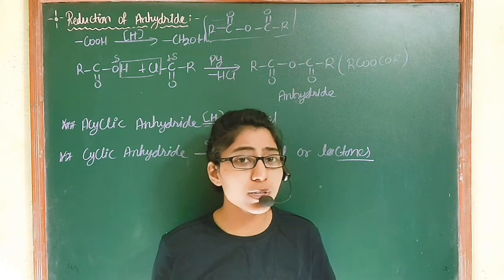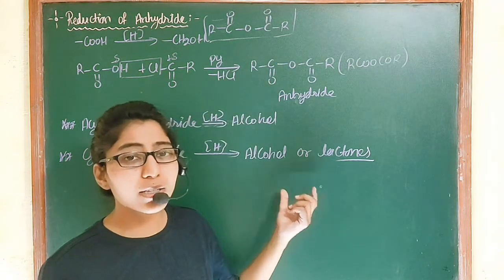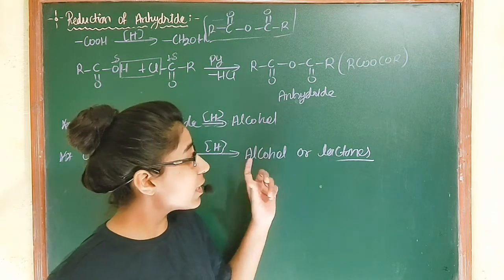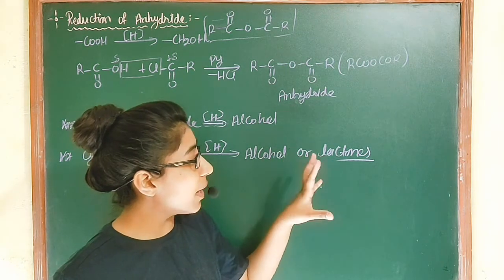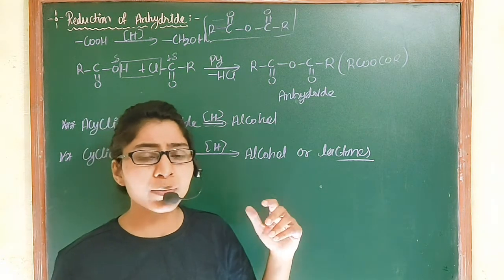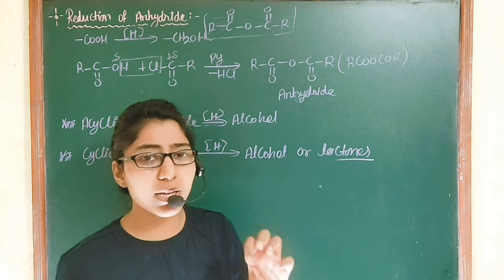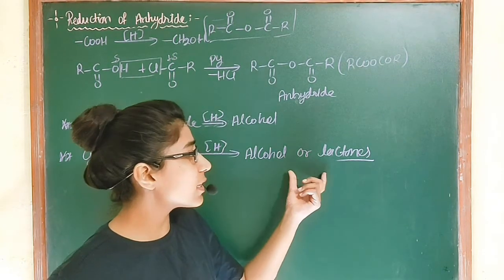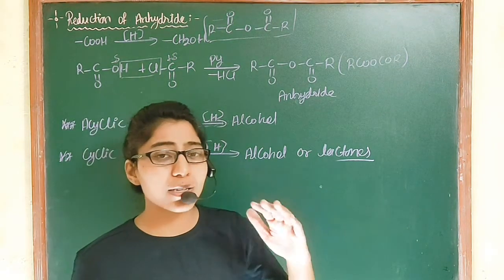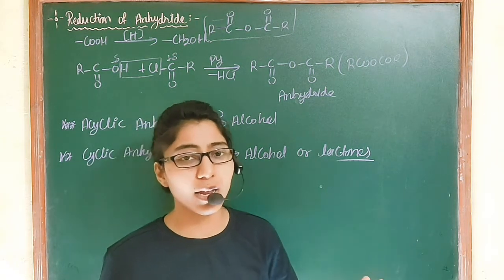A strong reducing agent will convert the anhydride completely to alcohol — that is the complete reduction product. If we use a mild reducing agent like NaBH4 or other mild agents, we get partial hydrogenation and partial reduction. In that case the product is lactone.